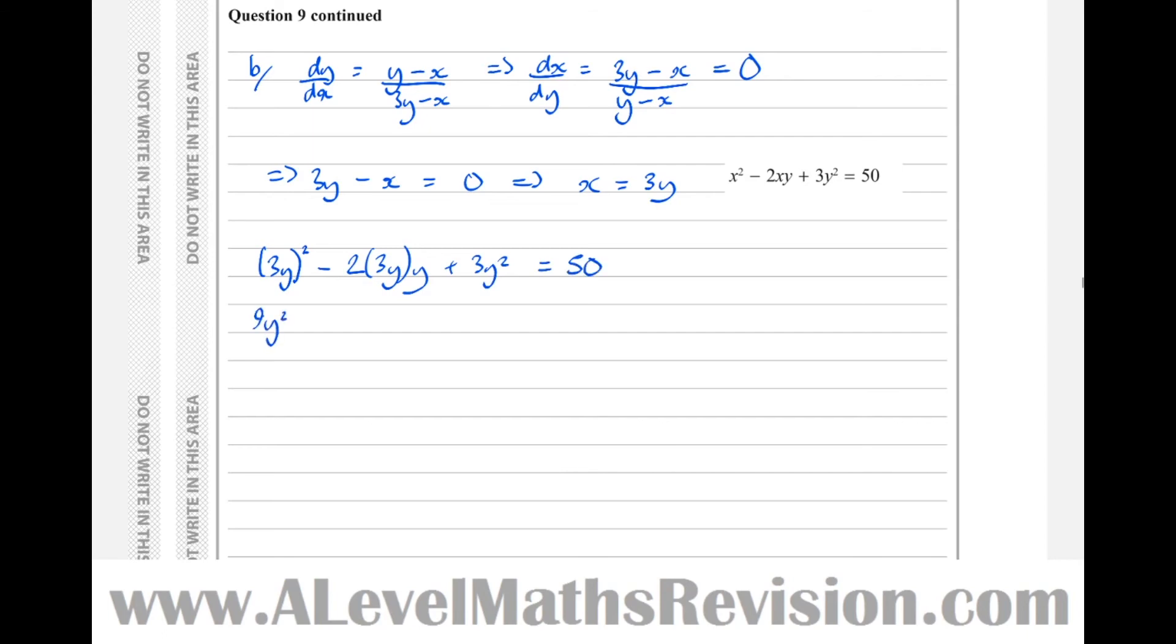That's 9y squared minus 6y squared plus 3y squared equals 50. So 9 minus 6 is 3, plus 3 is 6. So 6y squared equals 50, which means y squared equals 50 over 6. So y squared equals 25 over 3.